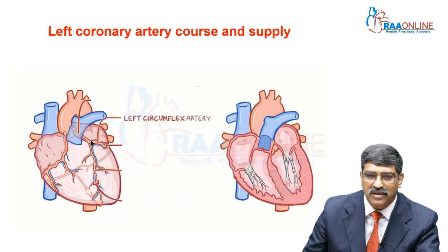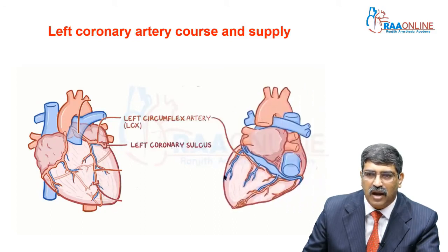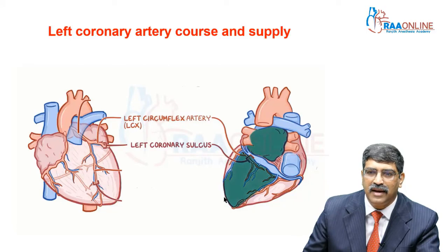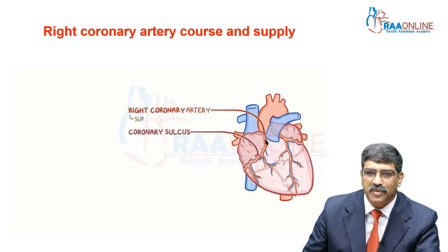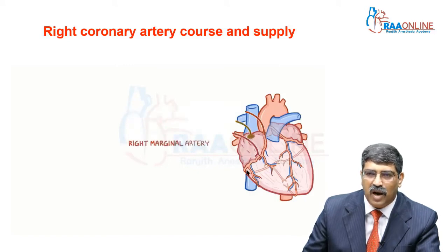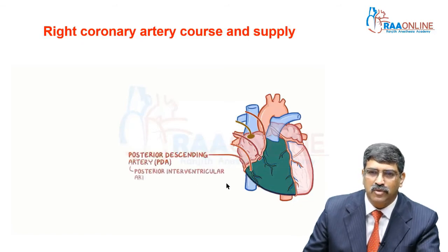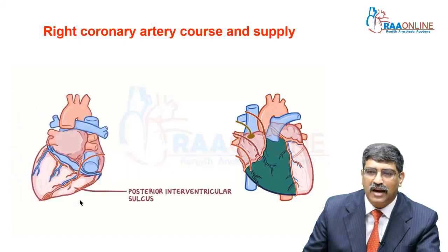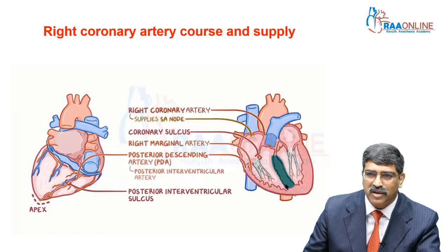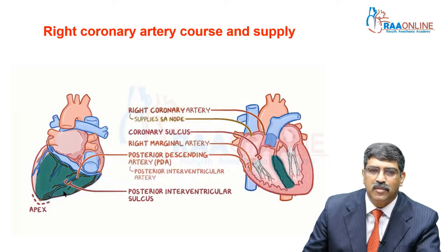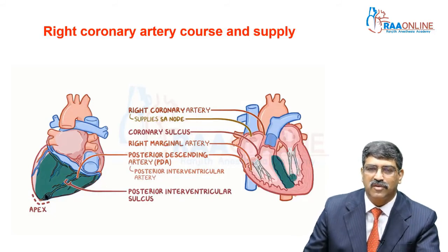The circumflex runs in the left crux between the left atrium and left ventricle, going posteriorly into the interventricular groove. Before doing so, it supplies the left atrium and the lateral left ventricle. The right coronary artery comes between the right atrium and right ventricle in the right coronary sulcus, first giving a branch to the SA node, then acute marginal branches supplying the full right ventricle, then continuing as the posterior descending artery in the posterior interventricular groove, supplying the posterior septum, posterior papillary muscle, and posterior left ventricle.